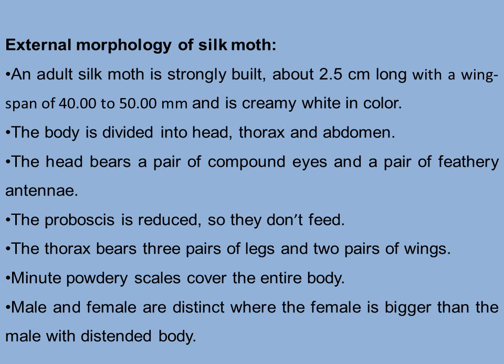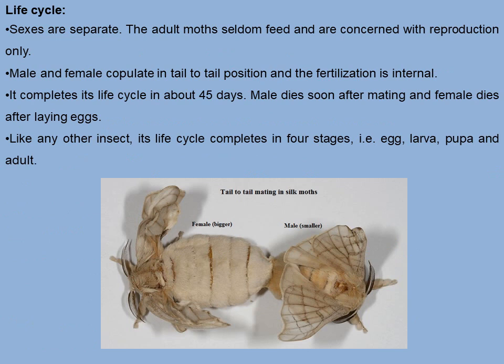Regarding the external morphology of the silk moth: an adult silk moth is strongly built, about 2.5 centimeters long, with a wingspan of 40 to 50 millimeters, and is creamy white in color. The body is divided into head, thorax, and abdomen. The head bears a pair of compound eyes and a pair of feathery antennae. The proboscis is reduced, so they do not feed. The thorax bears three pairs of legs and two pairs of wings. Minute powdery scales cover the entire body. The female is bigger than the male with a distended body.